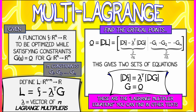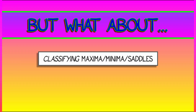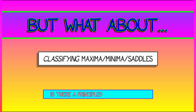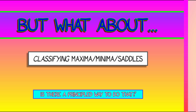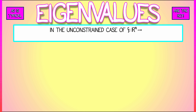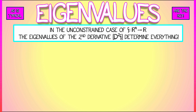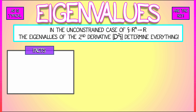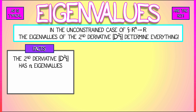These are the Lagrange multiplier equations you can find in other texts. But where are the eigenvalues? They crop up when you classify critical points into maxima, minima, and saddles. We did kind of a hack in 2D, but if you learn eigenvalues, everything is clear. In the unconstrained case of optimizing f, the eigenvalues of the second derivative determine everything. That second derivative — the Hessian — is an n by n matrix with n eigenvalues.